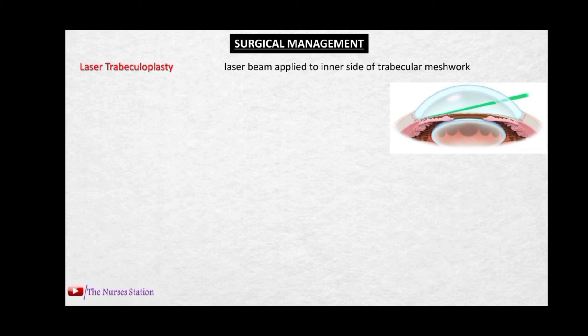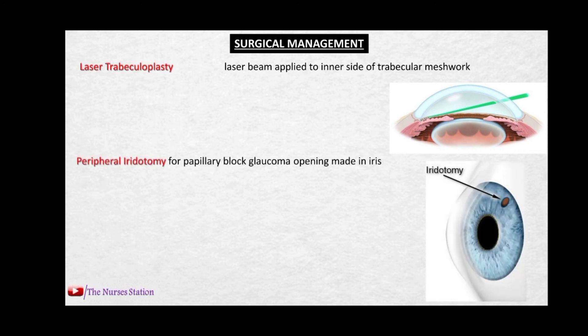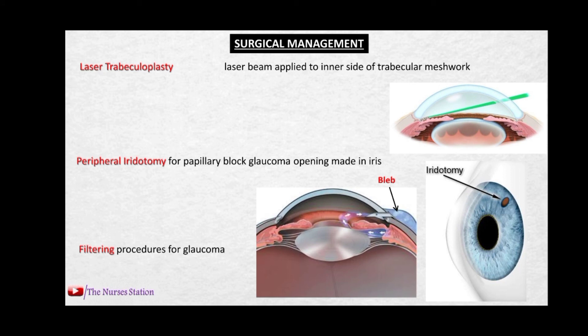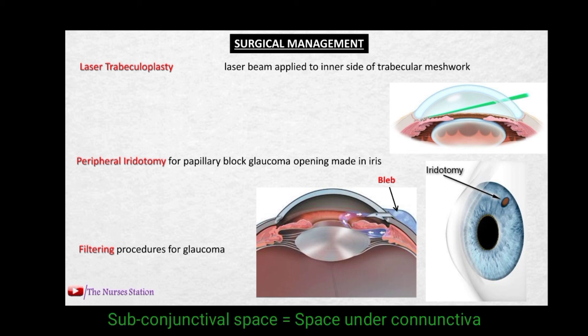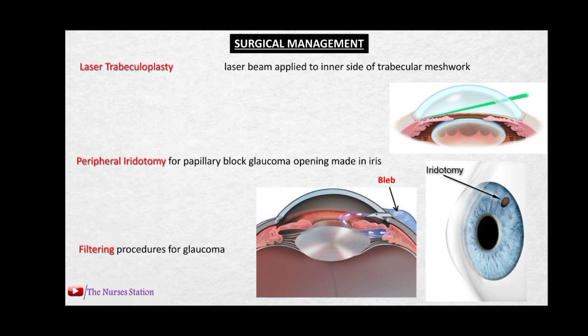For surgical management, the first option is laser trabeculoplasty, in which a laser beam is applied to the inner side of the trabecular meshwork to improve openings and enhance drainage of aqueous humor. The next is peripheral iridotomy, where an opening is created in the iris so fluid from the posterior chamber passes through into the anterior chamber and drains out. Filtering procedures create a fistula in the trabecular meshwork to drain aqueous humor from the anterior chamber into the subconjunctival space into a bleb, from which it mixes with tears and is absorbed by blood vessels.